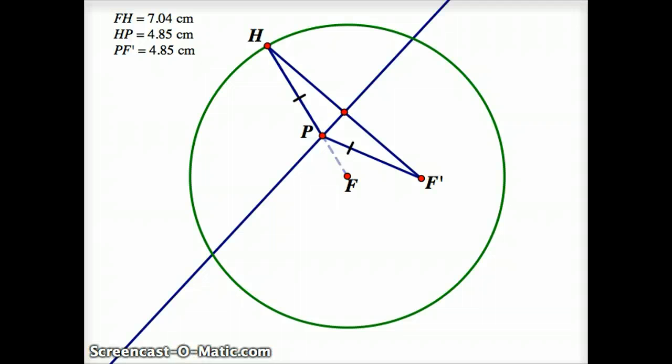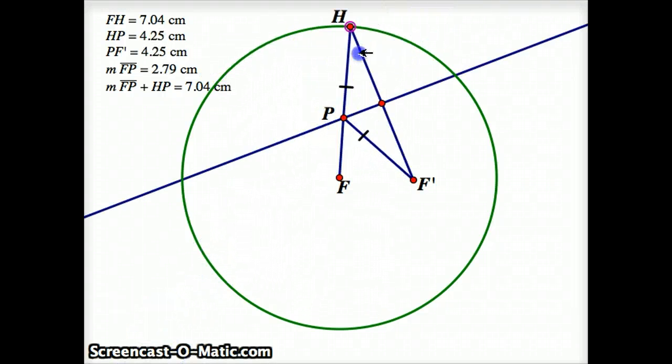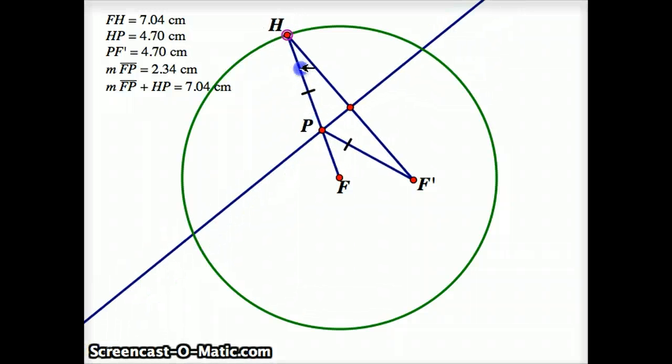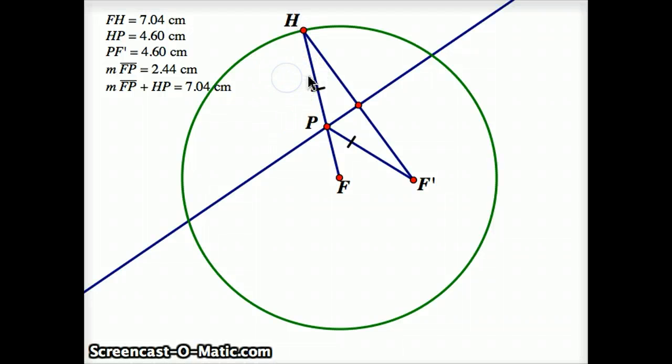Now, FP plus HP is always equal to the radius. As you can see, FP plus HP is just the radius itself. So when I add them together, I always get 7.04. But remember, HP was the same length as F prime P. So because of this, when I add together FP and F prime P, I'm also going to get the radius.